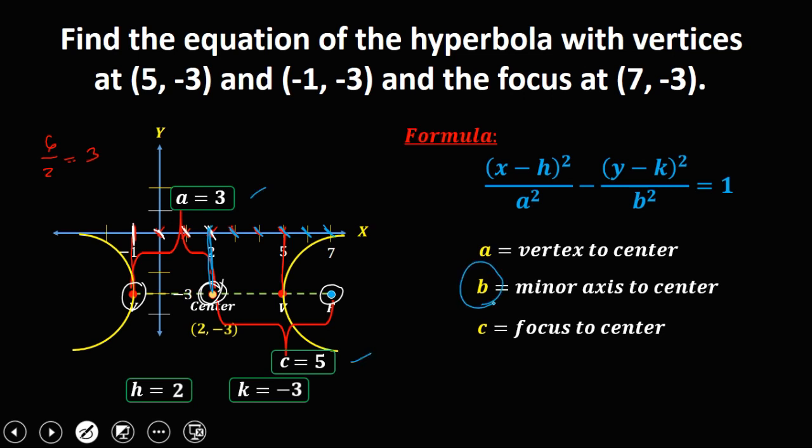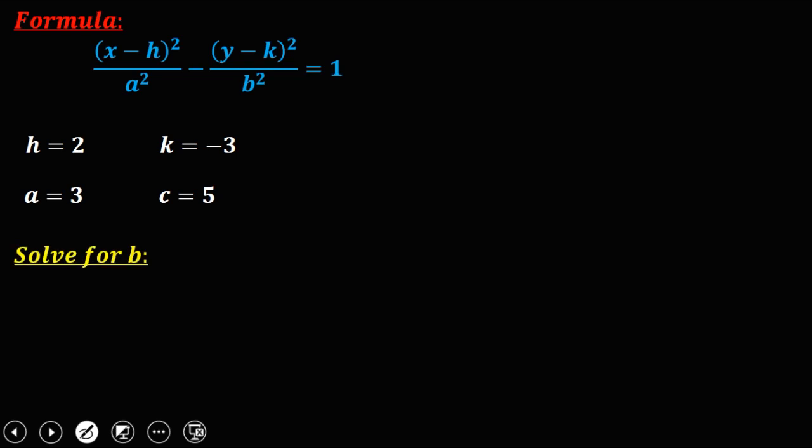So since we have a and c, we can solve now b using this formula: c² = a² + b². Then to solve for b, transpose a to the left side, so that becomes c² - a² = b².